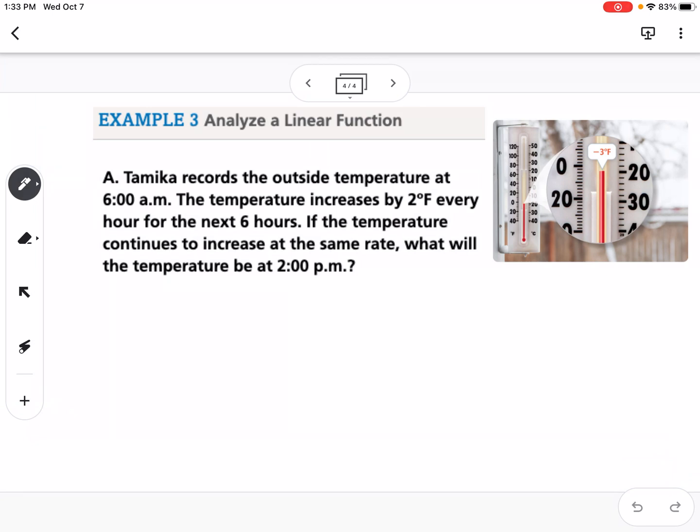So our last example is to analyze a linear function. It says, Tamika records the outside temperature at 6 a.m. The temperature increases by 2 degrees every hour for the next 6 hours. If the temperature continues to increase at the same rate, what will the temperature be at 2 p.m.? So if we look here, our picture shows that at 6 a.m., the temperature is negative 3 degrees Fahrenheit. So we know that's our starting point.